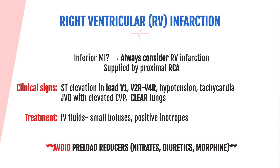Treatment includes medications that maximize preload — IV fluids with small boluses — to stretch the right ventricle at end diastole so it can pump blood forward to the left side. Positive inotropes are also used to increase contractility. Most importantly, you must avoid preload reducers at all costs: medications such as nitrates, diuretics, and morphine. These patients are preload dependent, and you want to maximize preload for the exam.